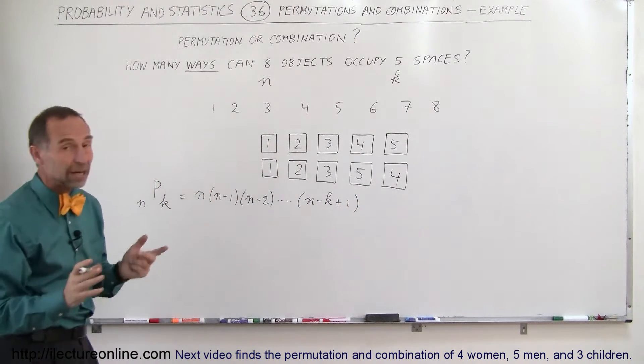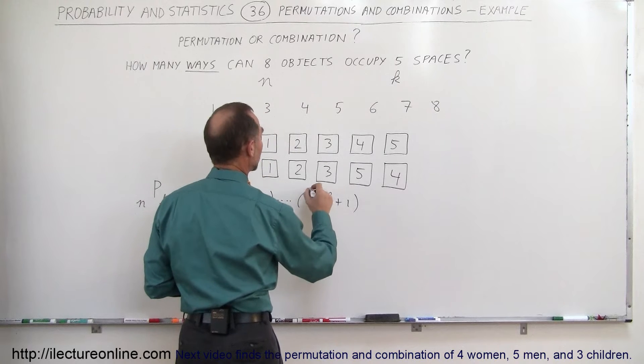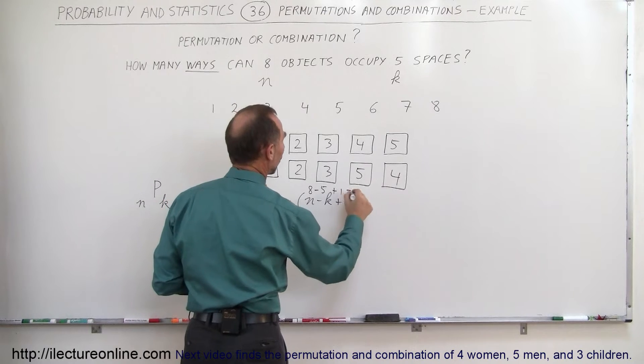In our example, since there's 8 objects and 5 spaces, n is 8, k is 5. So this would be 8 minus 5 plus 1, that would be 3 plus 1, which is equal to 4.